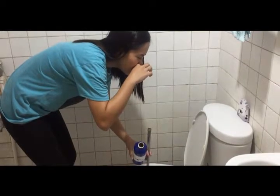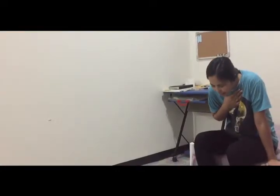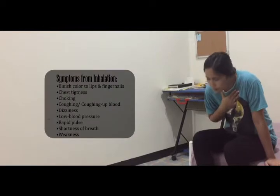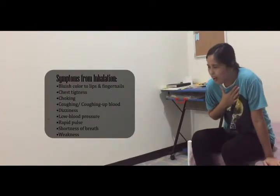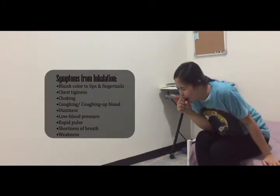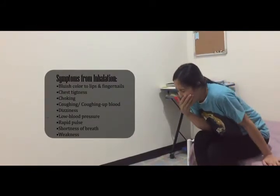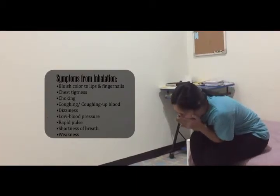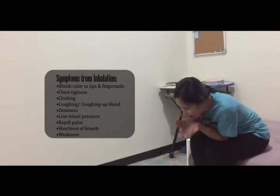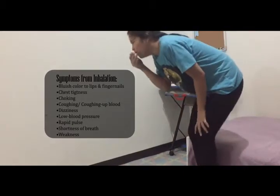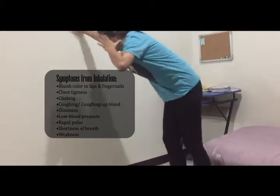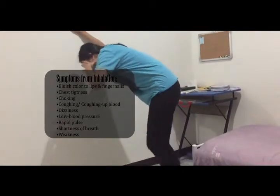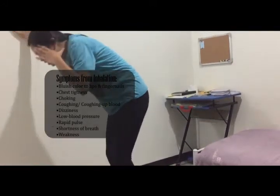Inhaling muriatic acid may cause a bluish color to the lips and fingernails, chest tightness, choking, coughing up blood, dizziness, low blood pressure, rapid pulse, shortness of breath, and weakness.